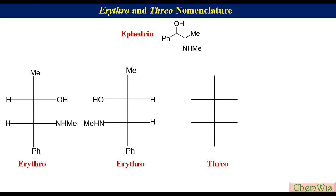For drawing one of the two threo isomers, draw an 'A' skeleton for the Fischer projection, put the methyl and phenyl groups on the vertical lines, place one H on the left and the other on the right, then put OH on the right and NHMe on the left. The second threo isomer will be its enantiomer.